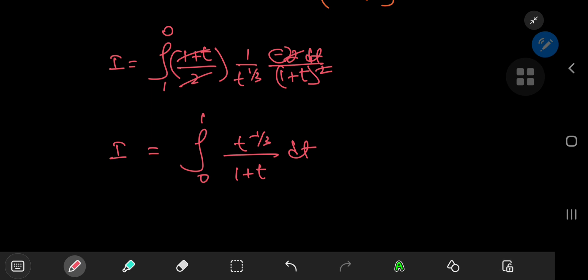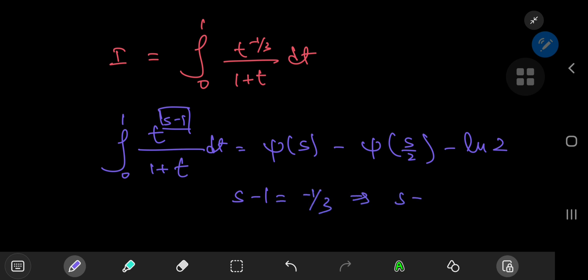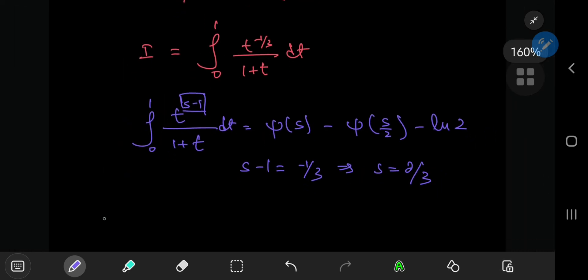Recently I made a proof video showing the integral from 0 to 1 of x to the s minus 1 divided by 1 plus x dx equals the digamma function evaluated at s minus the digamma function at s by 2 minus log 2. On comparing the exponents, we see that s minus 1 equals negative 1 by 3, so s equals 2 thirds. This means our integral i equals the digamma function at 2 by 3 minus the digamma function at 1 by 3 minus log 2.